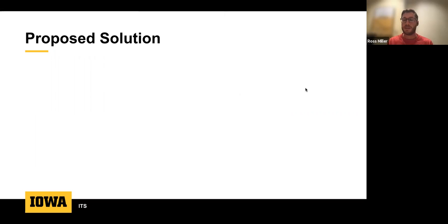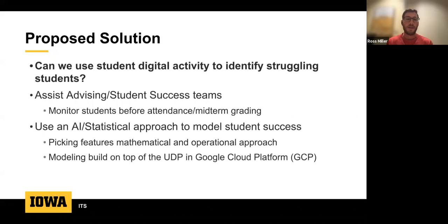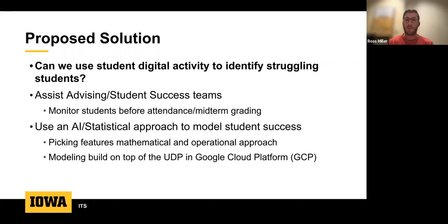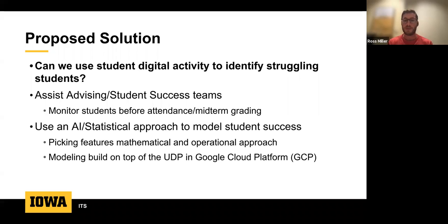Our proposed solution is a tool to assist advisors and student success teams in figuring out which students are struggling before midterm grading. After midterm we have a good idea of who's succeeding, but that's not helpful if students could still improve. We wanted early intervention using an AI or statistical approach — a machine learning model built on top of the Unison data platform using Google Cloud.